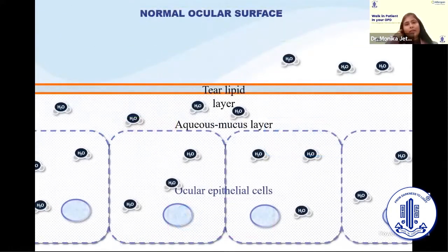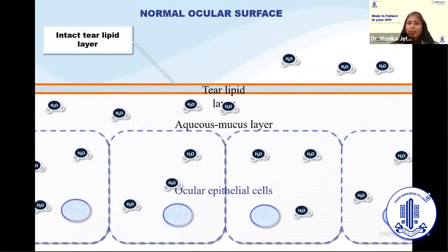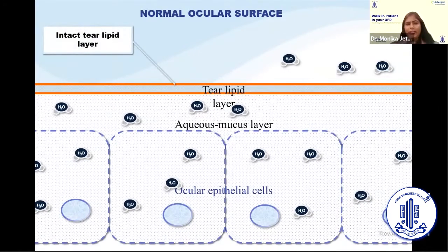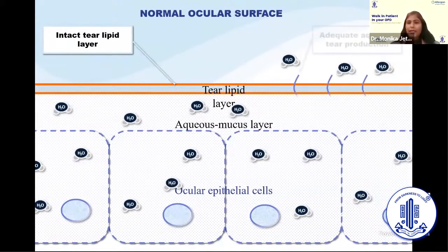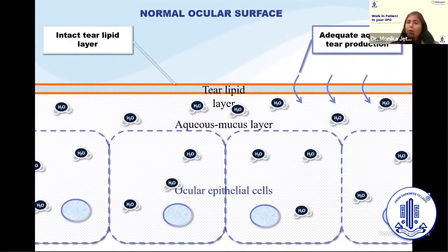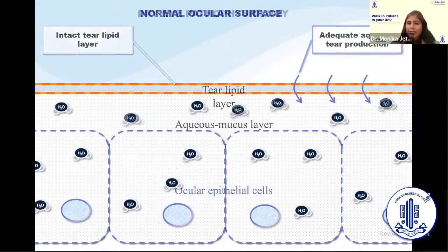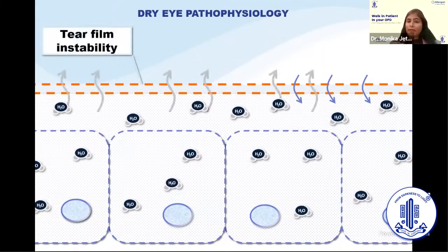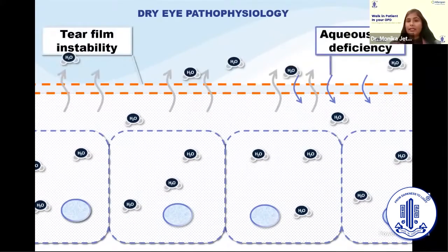To break the cycle, we first need to look at the normal ocular surface. We can see that there is a very clean, neat, intact lipid layer with adequate aqueous tear production, so aqueous molecules are entering normally. Whereas in the dry eye pathology slide, there is tear film instability and the lipid layer is deficient.